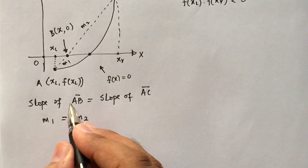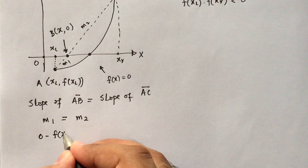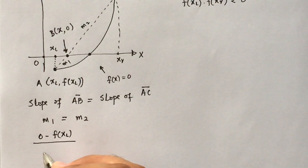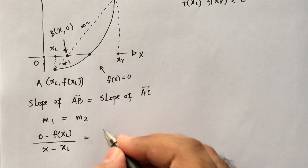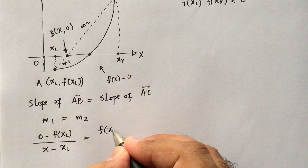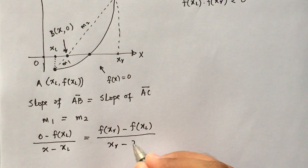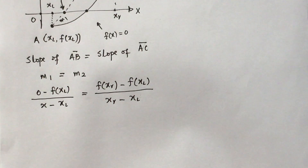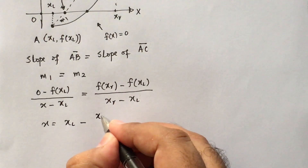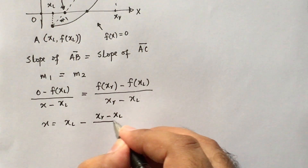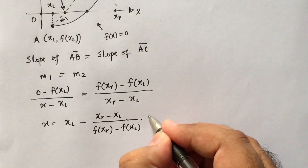Using the slope formula, the slope of AB can be written as (0 − f(x_l)) / (x − x_l), and this equals the slope of AC which is (f(x_r) − f(x_l)) / (x_r − x_l). Rearranging this gives the False Position formula: x = x_r − [(x_r − x_l) / (f(x_r) − f(x_l))] × f(x_l).